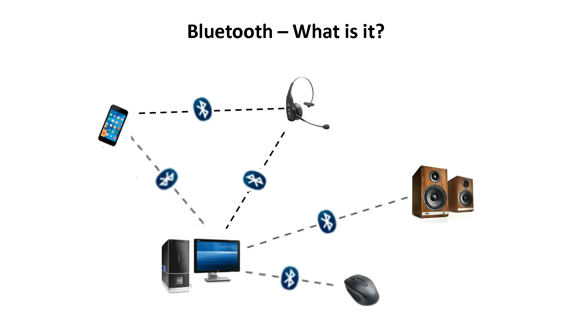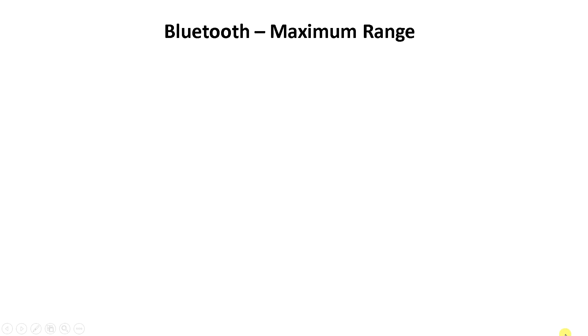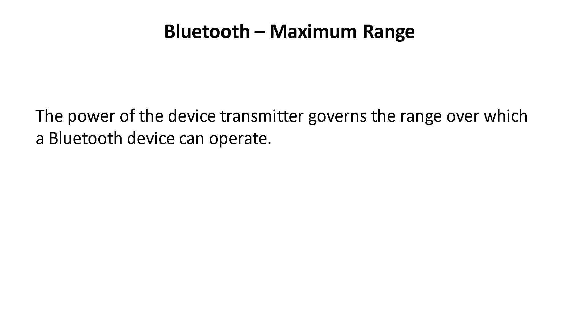But there is a maximum range for which a connection will not be established. So what is this maximum range? Every Bluetooth device has a transmitter and a receiver, and the power of the device transmitter governs the range over which a Bluetooth device can operate.